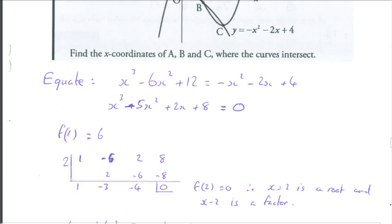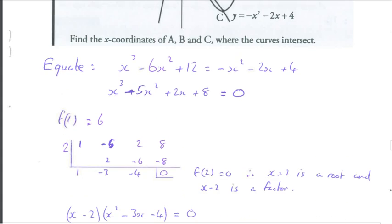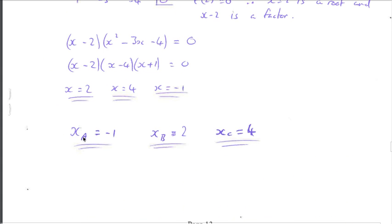I did want the x coordinates of A, B, and C. Well, it's A, then B, then C. So xA, the x coordinate of A is negative 1, xB equals 2, and xC equals 4.